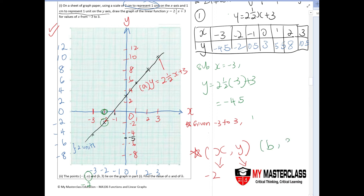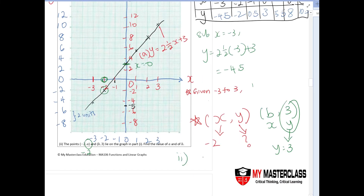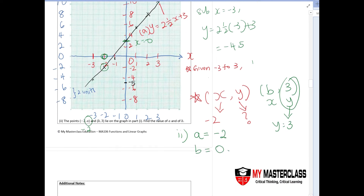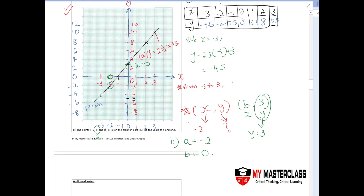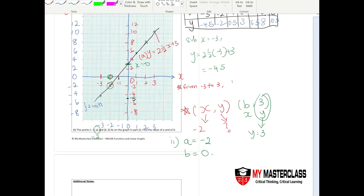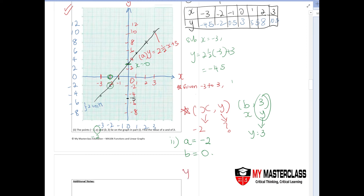For (b, three), y = three, so find the corresponding x-value. When y = three, x = zero, therefore b = zero. A common mistake students make is mixing up the coordinate order — they write y = negative two and x = zero, which is wrong. The answers are a = negative two and b = zero.